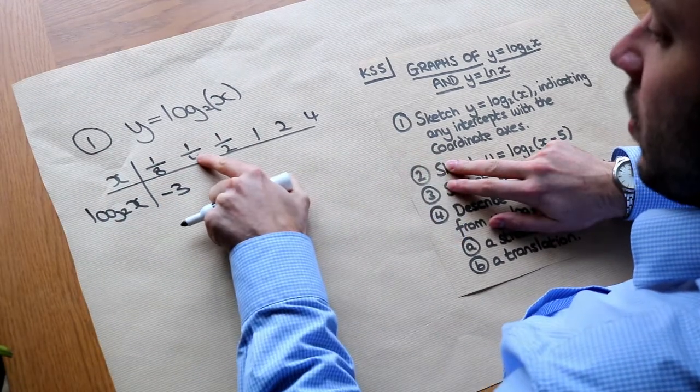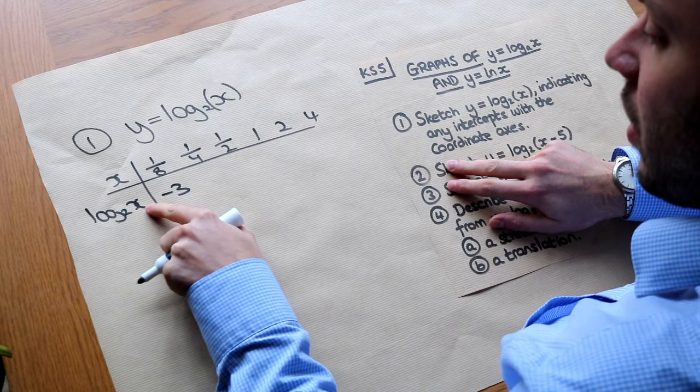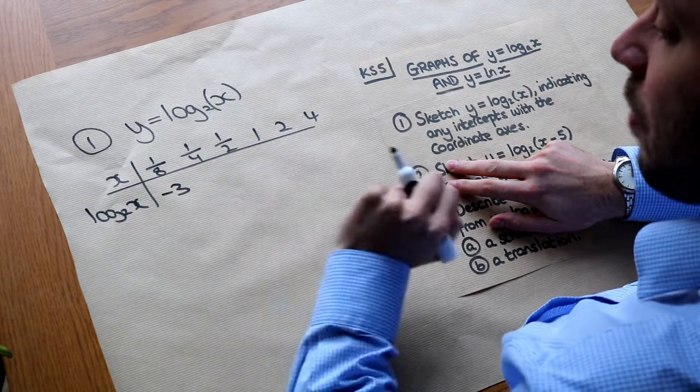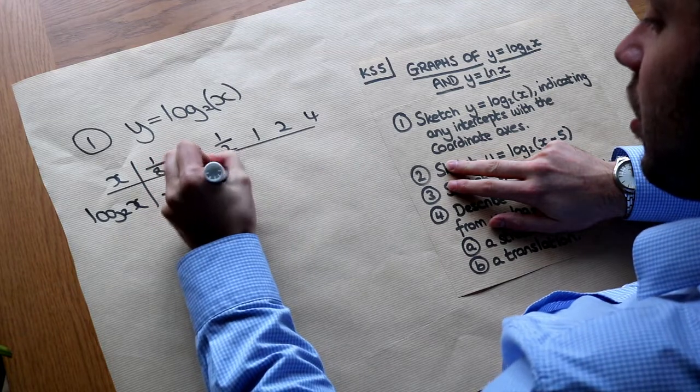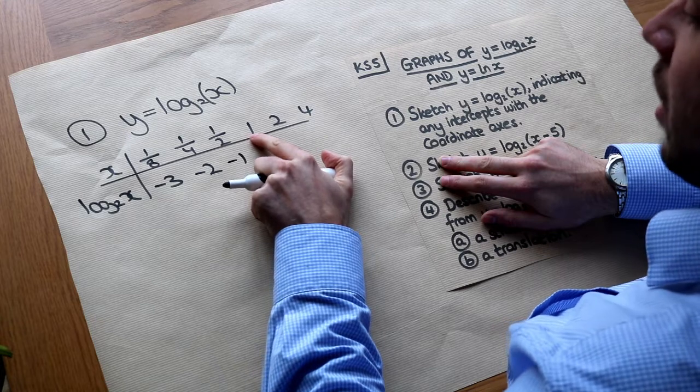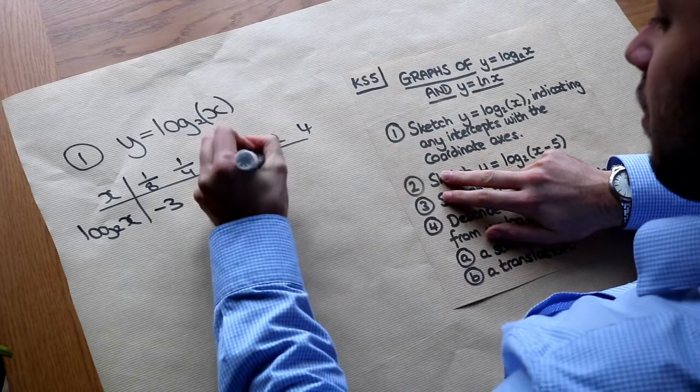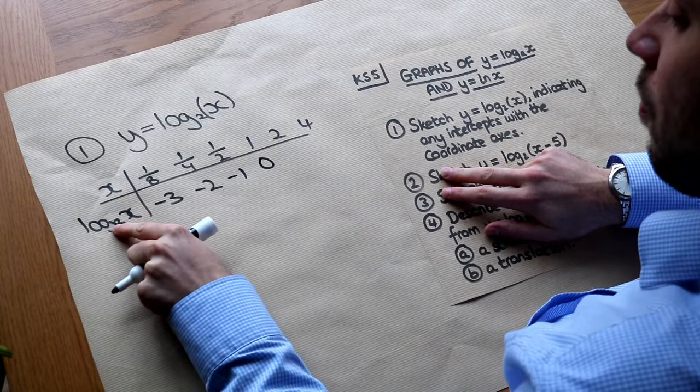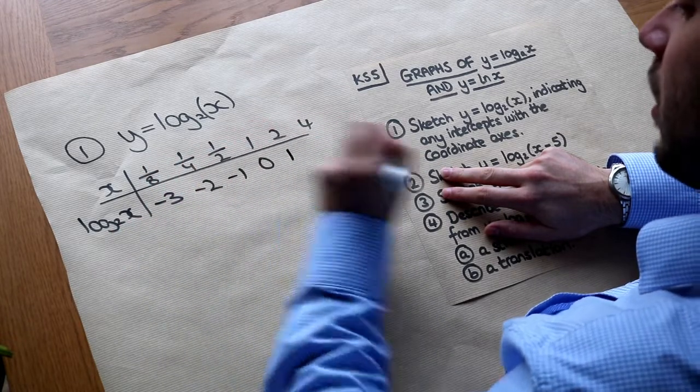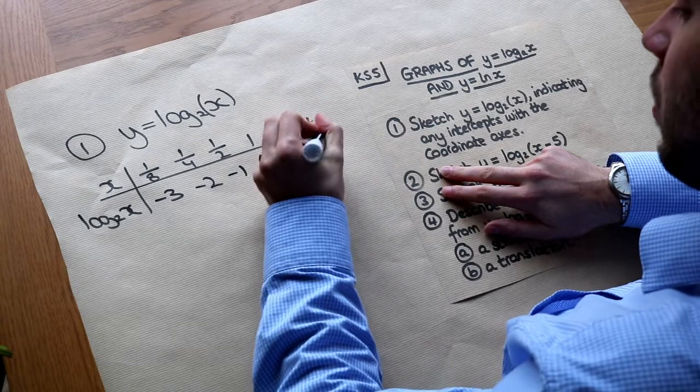Now what about a quarter? So log base 2 of a quarter, 2 to the power of what is a quarter? Well it's 2 to the power of minus 2, so that'll be minus 2. This will be minus 1. Then what about log base 2 of 1? Now you should know that log of 1 is always 0, so this is 0. Log base 2 of 2, 2 to the power of what is 2? Well it's 1. And 2 to the power of what is 4? Well it's 2.